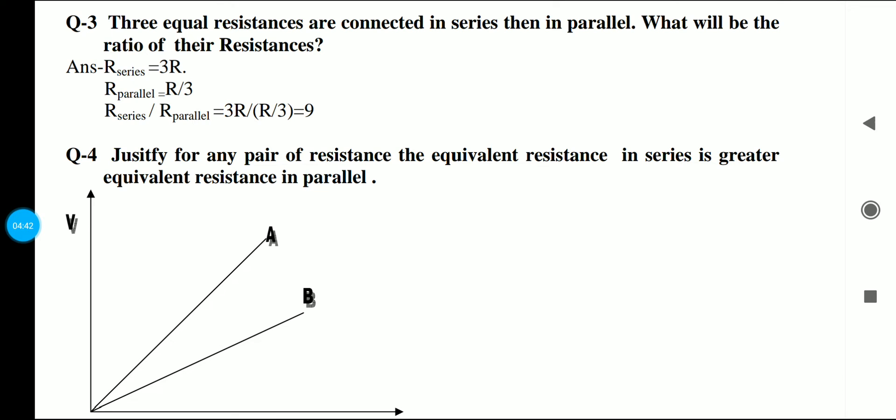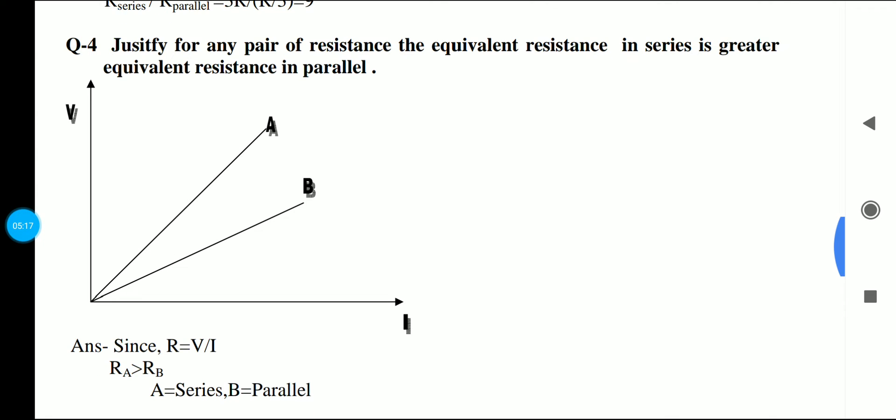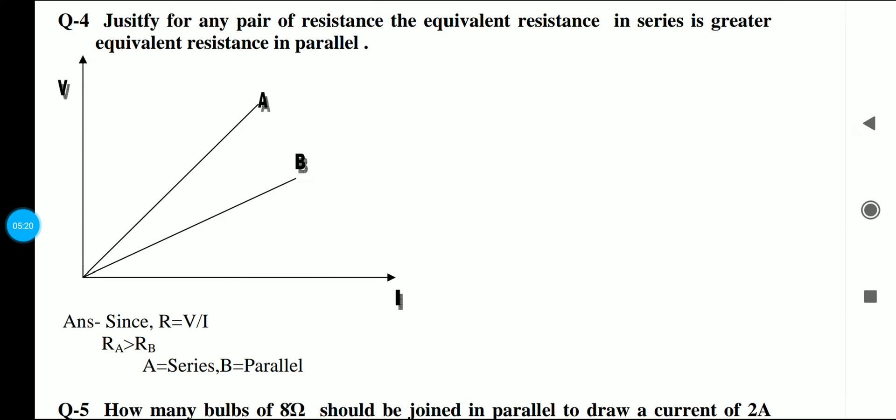Three equal resistances are connected in series then in parallel. What will be the ratio of their resistances? Resistance series upon resistance parallel will be 3R upon R by 3. After canceling, R will be 9, so 9 ratio 1 will be our answer.